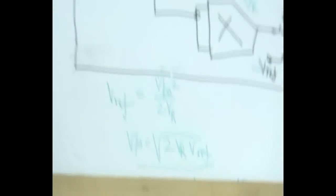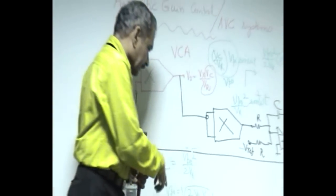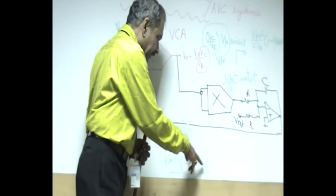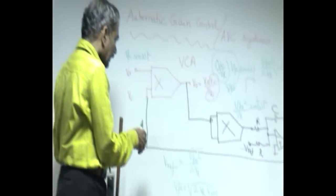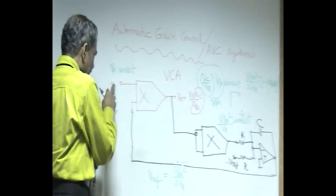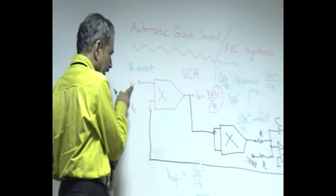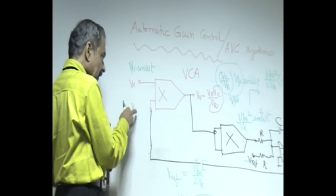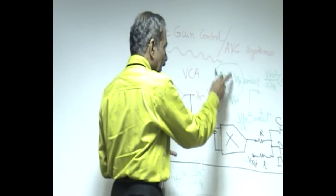That means V_po remains constant at a value of square root of 2V_r times V_reference by this arrangement. Therefore, whenever the input is changing, V_x is changing, then correspondingly V_c will—if V_x decreases, V_c should increase.